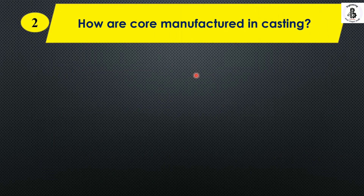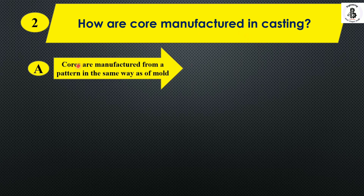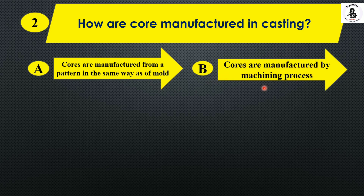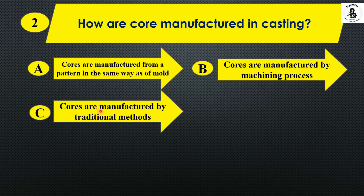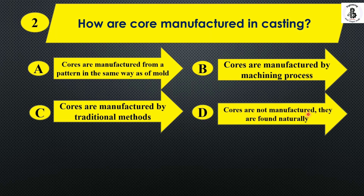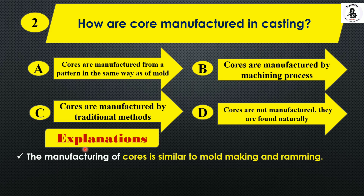Question 2: How are cores manufactured in casting? Option A: cores are manufactured from a pattern in the same way as a mold. Option B: cores are manufactured by machining process. Option C: cores are manufactured by traditional methods. Option D: cores are not manufactured — they are found naturally. The manufacturing of the core is similar to the mold-making and ramming process, so Option A is the right answer.